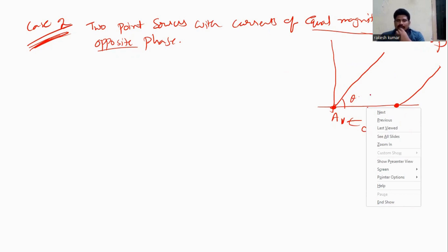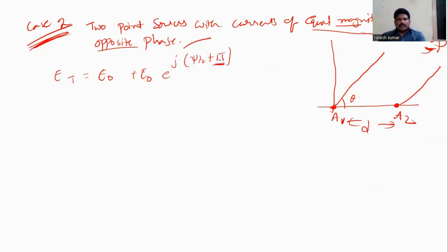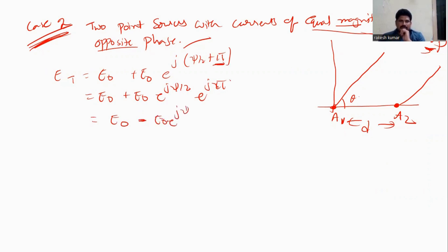The total electric field ET is a combination of both sources. Since the magnitudes are equal but the phases are opposite, ET can be written as E₀ plus E₀·e^(j(ψ/2 + π)). Since e^(jπ) equals −1, this becomes E₀ minus E₀·e^(jψ/2). Introducing 180 degrees phase shift gives us a minus sign.